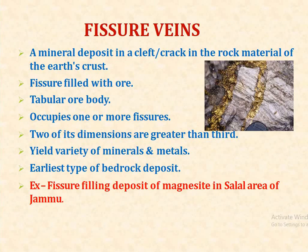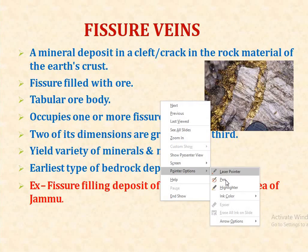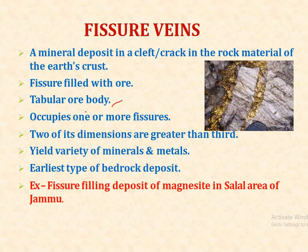The first type of cavity filling deposit is fissure vein deposits. Fissure vein deposits include mineral deposits in a cleft or crack in the rock material of the earth's crust. A fissure filled with ores forms a tabular ore body. It occupies one or more fissures — two of its dimensions are greater than the third. They yield a variety of minerals and are the earliest type of bedrock deposit. An Indian example is the magnesite deposit in the Salal area of Jammu and Kashmir.